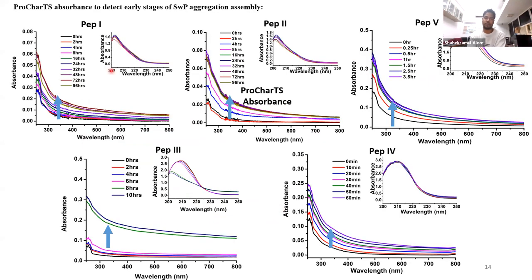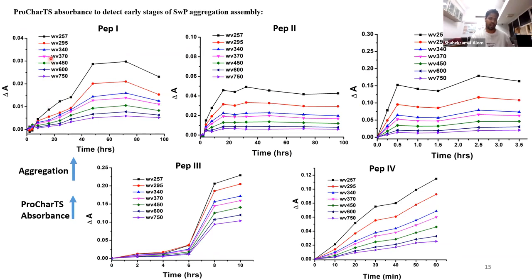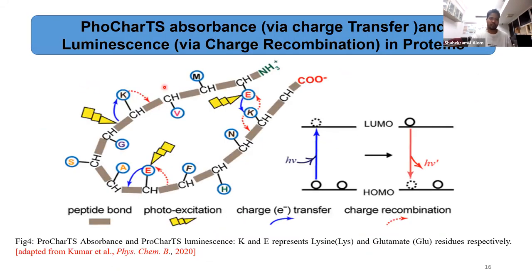So we assumed that during aggregation, when monomers come closer and interact, this kind of charge transfer transition should happen and we should get increased absorbance in this tail region. What we found is that for all the peptides used in this study, the ProCharTS absorbance increased with time. We took absorbance data for all wavelengths and plotted versus time, finding an appreciable increase for all peptides — some steeply and some more gradually.